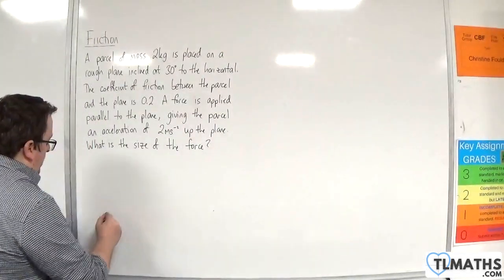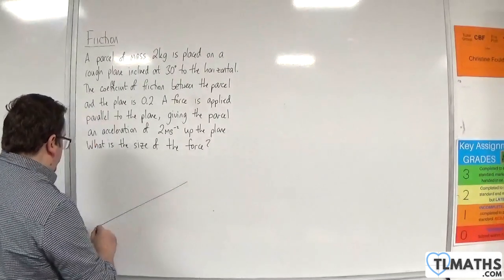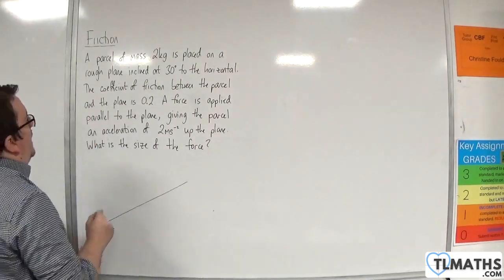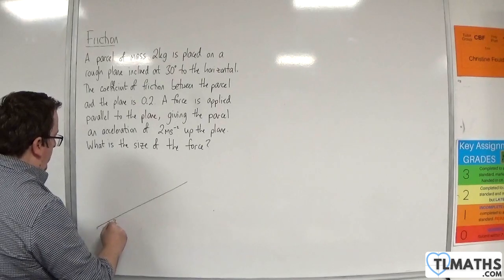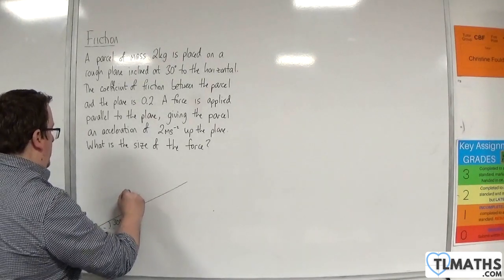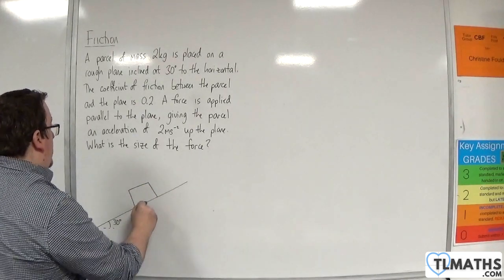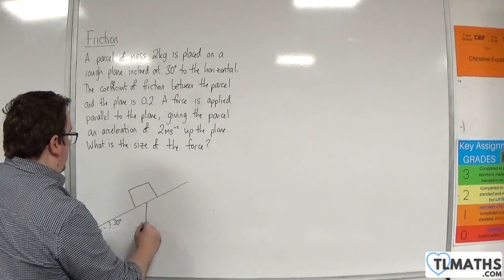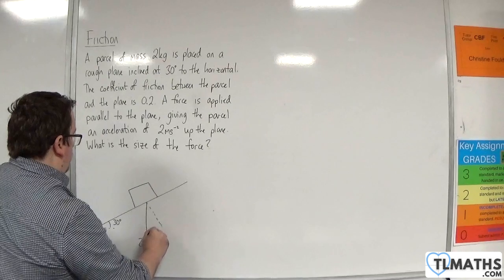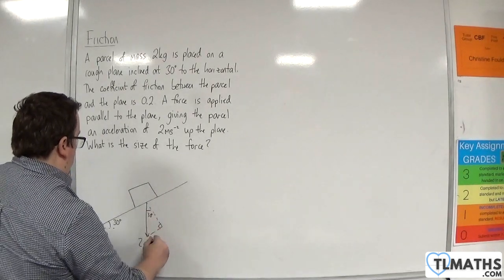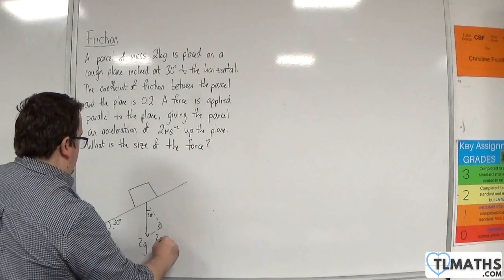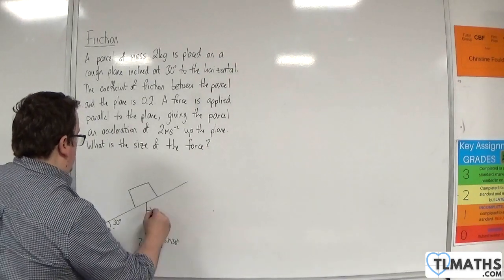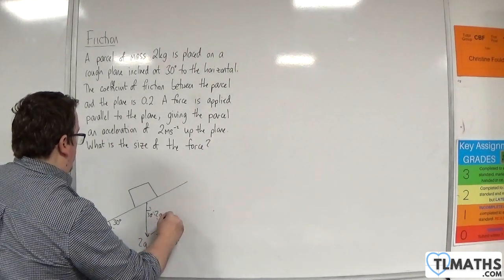We have a slope. The angle is 30 degrees, and here is the parcel. It has a mass of 2 kilos, so it's got a weight of 2g. Let's complete our triangle. That's 30 degrees. This is 2g sin 30, and this is 2g cos 30.